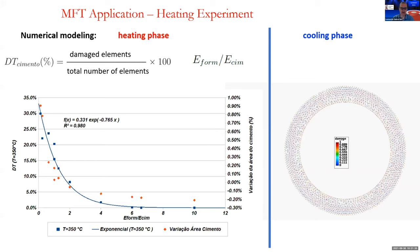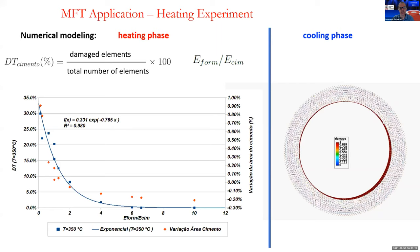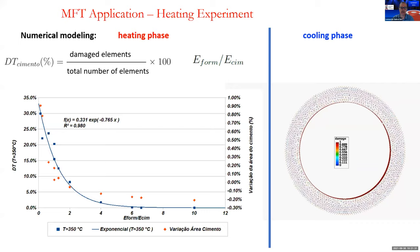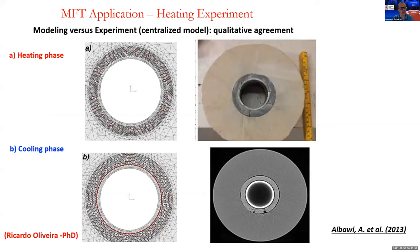In the cooling phase, we could also show the detachment of the surface between the cement and the casing. In the heating phase we have radial fractures, and in the cooling phase we have detachment — which can be seen in the experiment. In this tomography image, we can identify a few fractures and also the detachment of the surface.